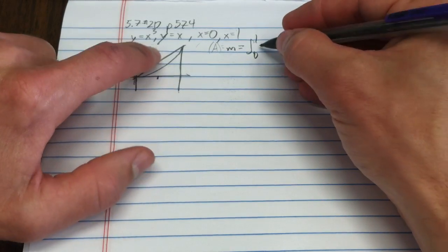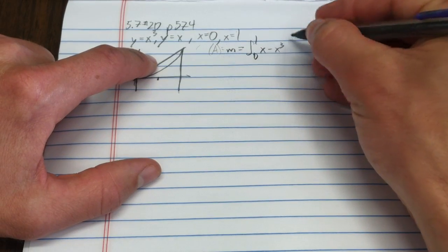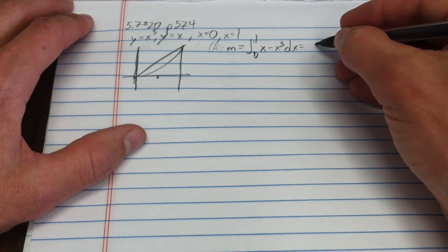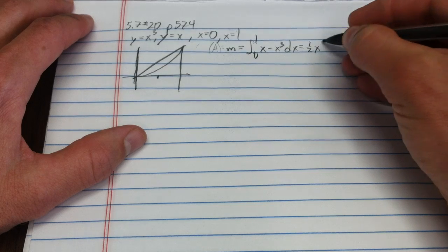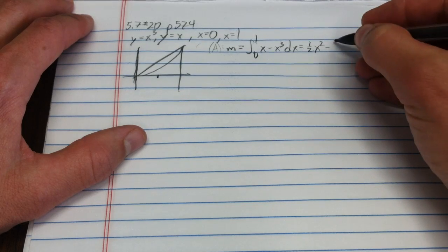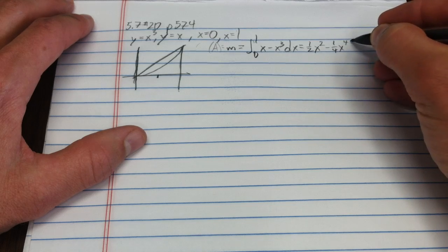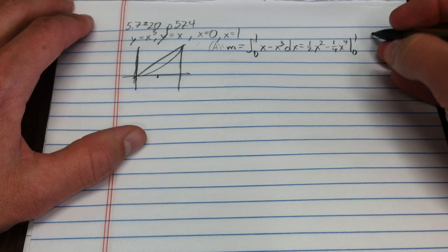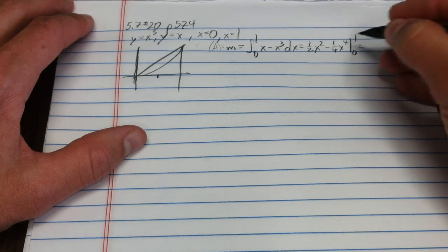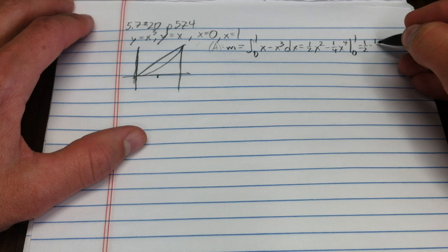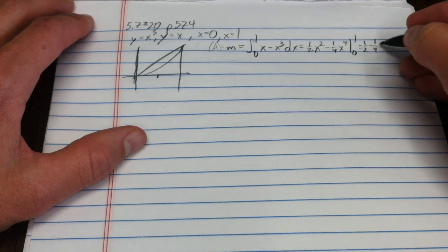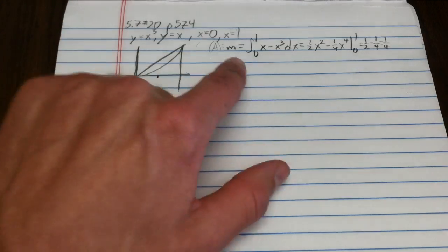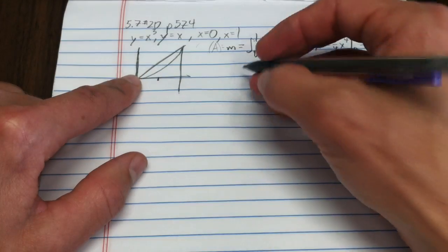the top minus the bottom, x minus x cubed dx. So the area is one-half x squared minus one-fourth x to the fourth, evaluated from 0 to 1. Evaluating at 0 does nothing, so I have a half minus a fourth, which says the area is one-fourth. Or if it had density one, the mass would be one-fourth.